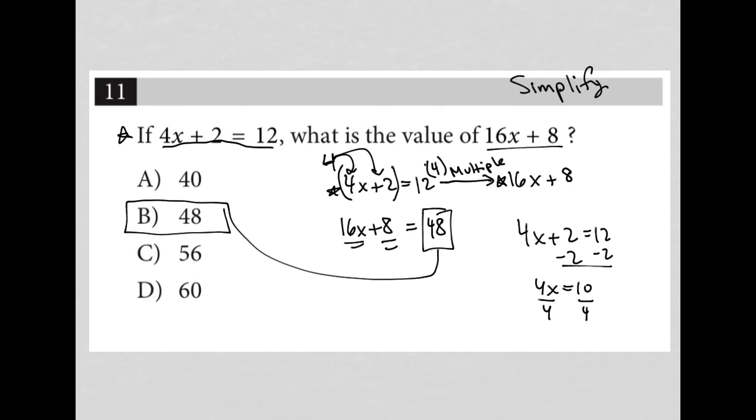Maybe you wouldn't like it so much because you'd have x equals 5 over 2, since 10 fourths is 5 halves. And then you'd have to take that value and plug it into the x value.